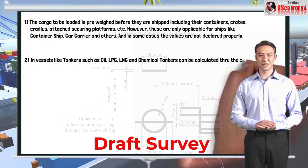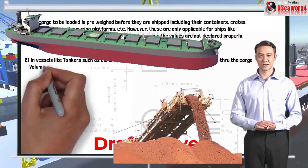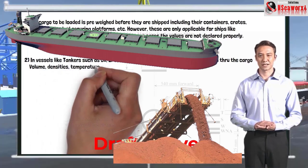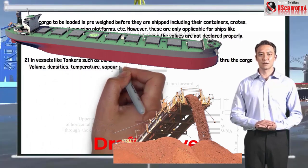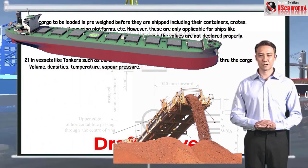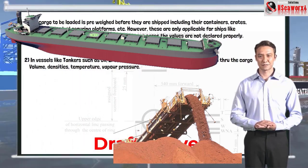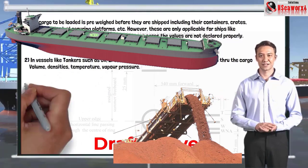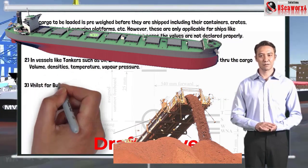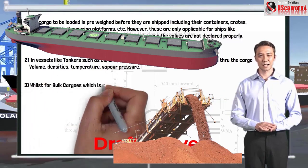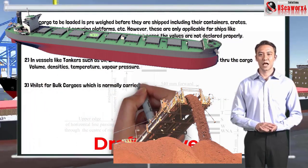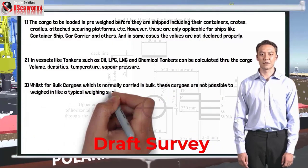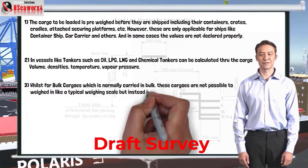And number three, for bulk cargos which are normally carried in bulk — these cargos are not possible to weigh like a typical weighing scale. Instead, it is the ship itself, through the draft markings, that is used to find how much cargo was loaded, and likewise the total displacement or weight of the ship.